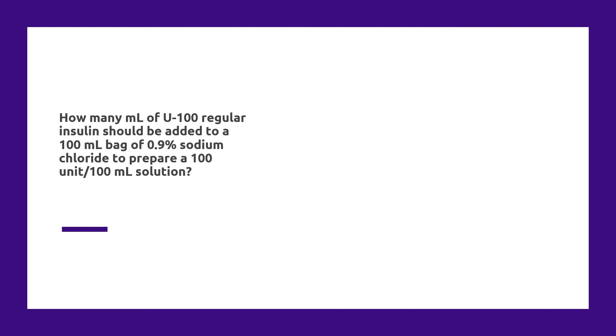So we need to solve for how many milliliters. We know we have U-100 concentration insulin and we know our desired concentration is 100 units per 100 milliliters.